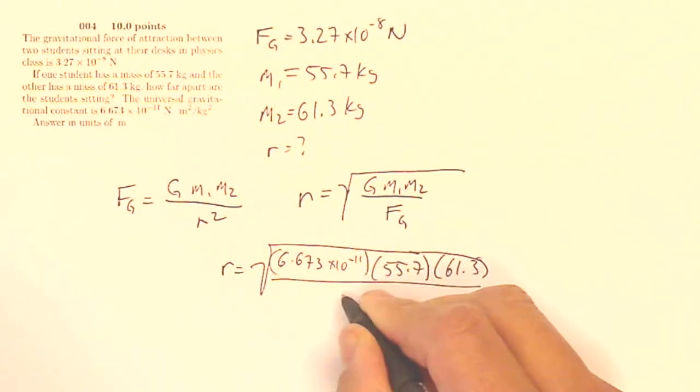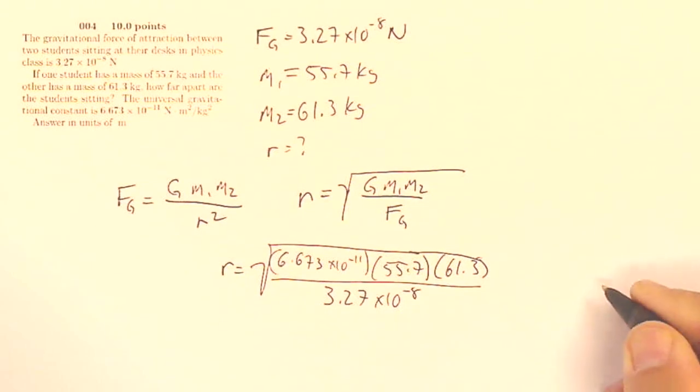divided by the force of gravity between them, which is 3.27 times 10 to the minus 8 newtons. And that will give you the distance between them.